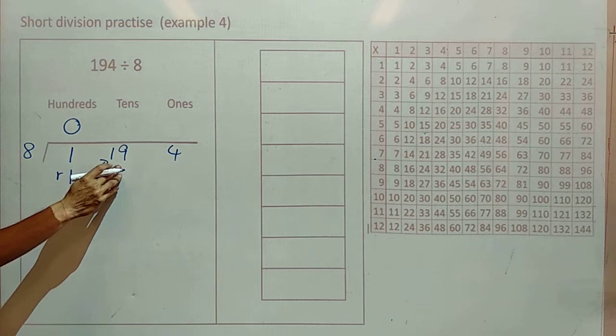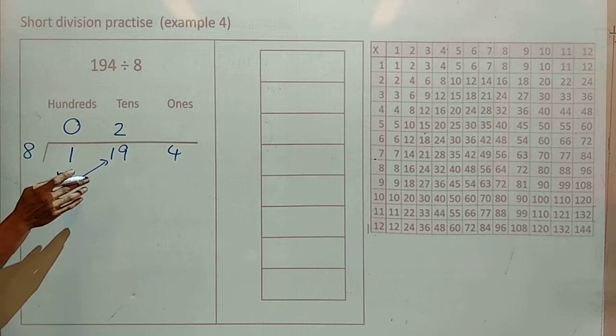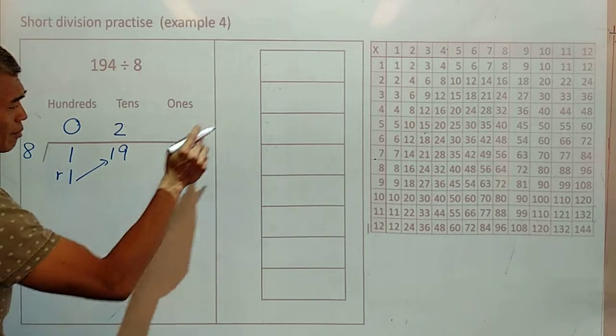So we have 19 groups of 10, which we're going to split among 8 boxes. And we know that 2 eights go into 19.